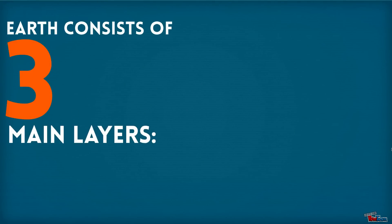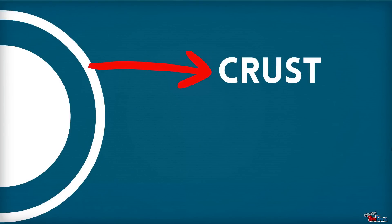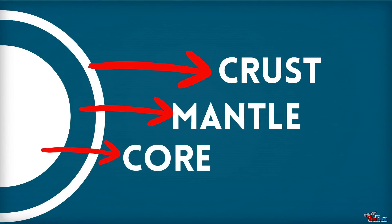Earth consists of three main layers: the crust, the mantle, and the core.